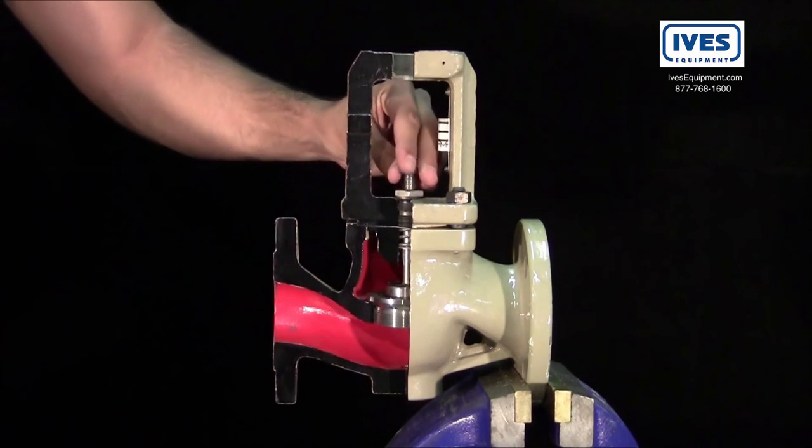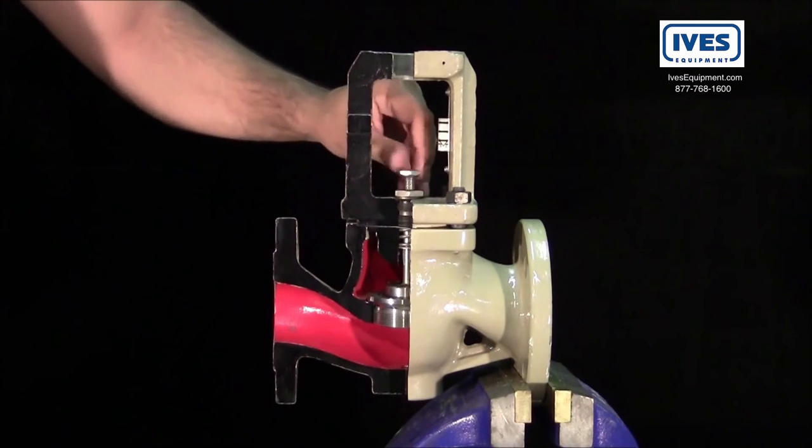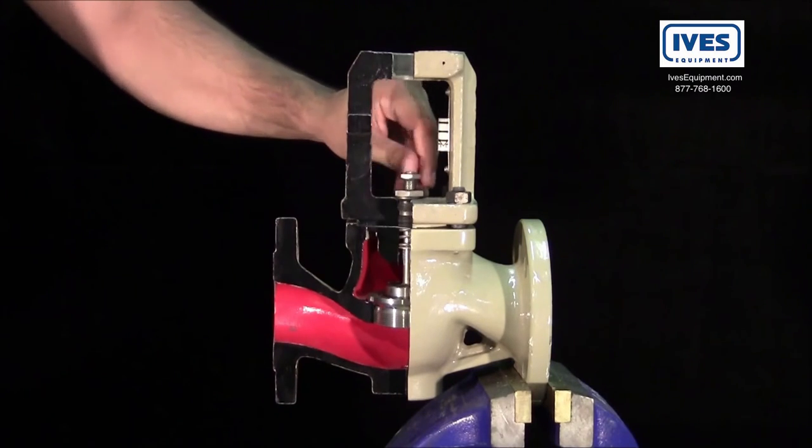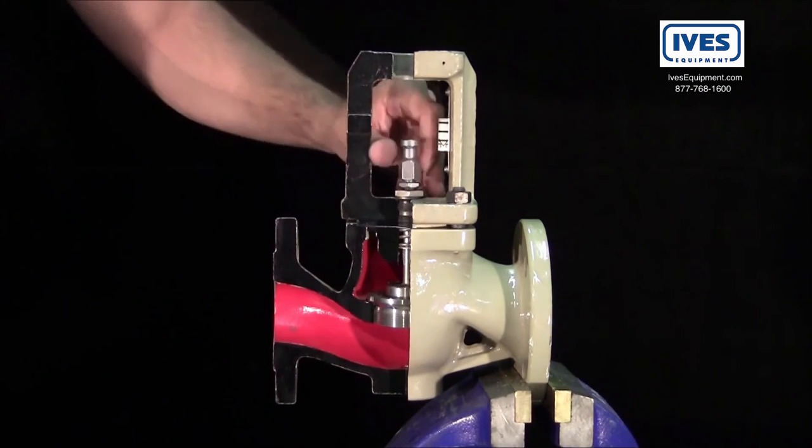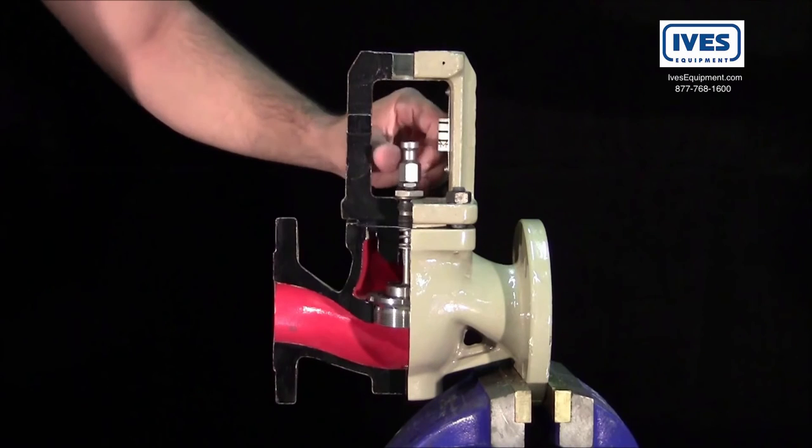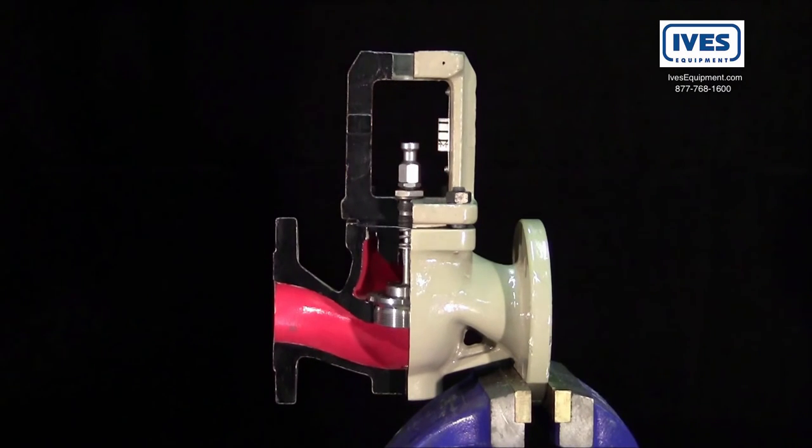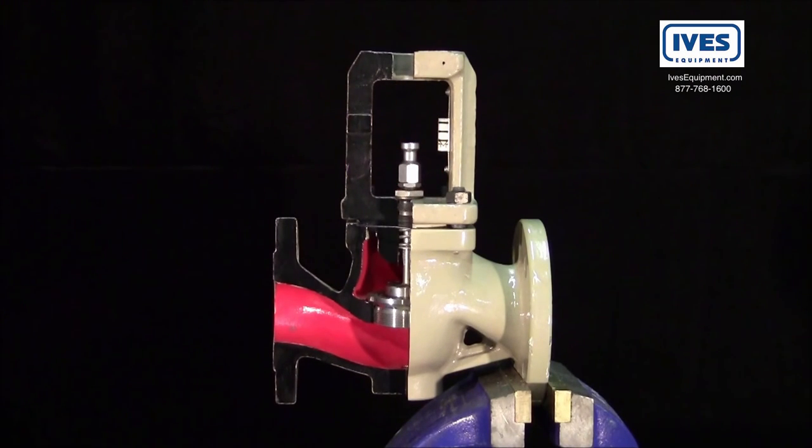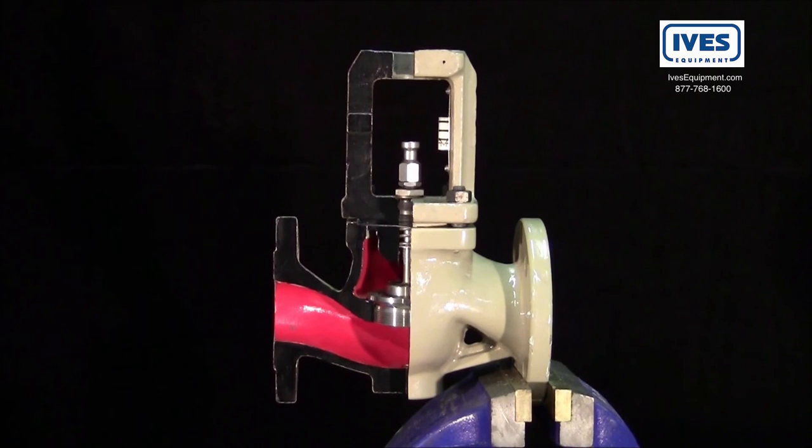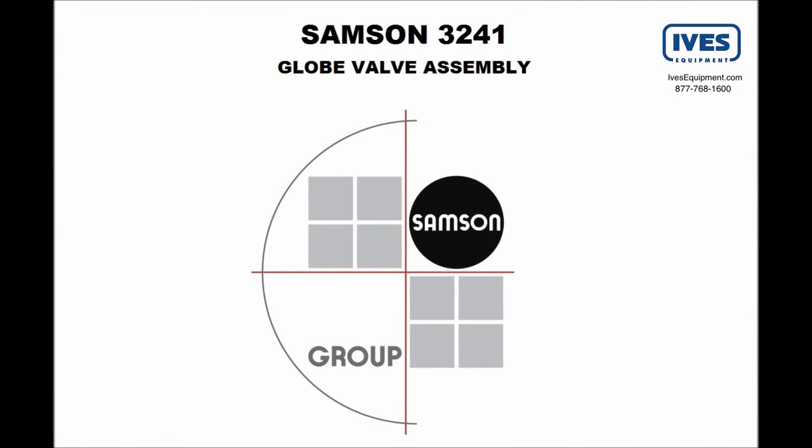The final step remaining is to loosely thread the locking nut and stem connector nut onto the plug stem. The valve is now ready for actuator installation. We hope you enjoyed this how-to video and thank you for watching.